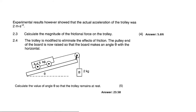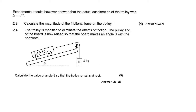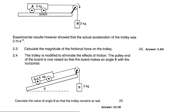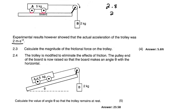Now we go into the second half. They tell us that experimental results showed the actual acceleration of the trolley was 2 meters per second squared. We calculated 2.8, but when they did it using an experiment, they got 2. So the trolley is accelerating a little bit slower — that would be because there is a little bit of friction at the wheels. So now they're saying: find out what that friction force would be.